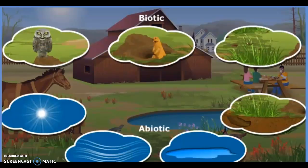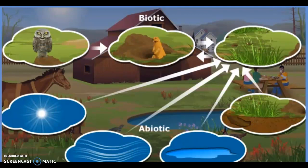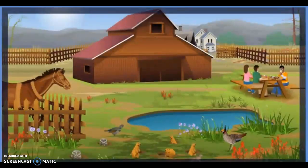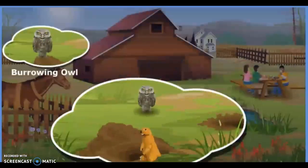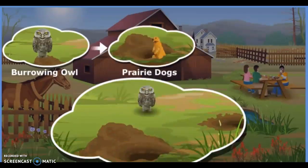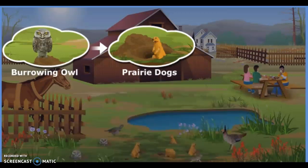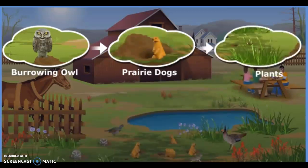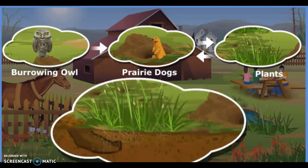The biotic and abiotic components of an ecosystem are interdependent. For example, in the short grass prairie ecosystem, the burrowing owls depend on the prairie dogs — they use abandoned prairie dog burrows as their homes. Prairie dogs depend on plants for food, and on rain for water. Plants depend on prairie dogs to loosen the soil, which makes it easier for plants to grow.